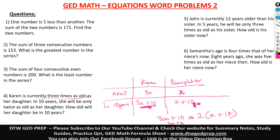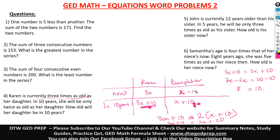Solving: 3X plus 10 equals 2X plus 20. Collecting like terms — bring 2X to the left and 10 to the right: 3X minus 2X equals 20 minus 10, which gives us X equals 10. So the daughter's current age is 10. But the question asks how old will her daughter be in 10 years, so we use X plus 10: that's 10 plus 10, which is 20. In 10 years, her daughter will be 20.